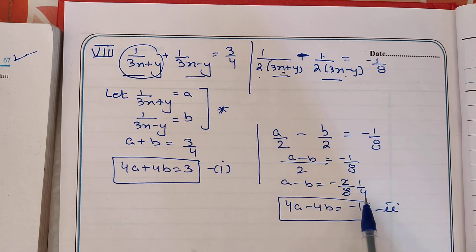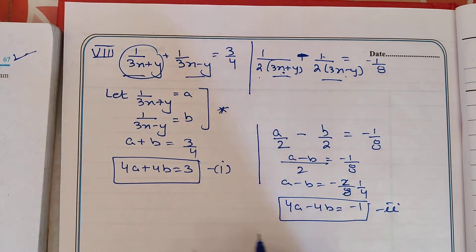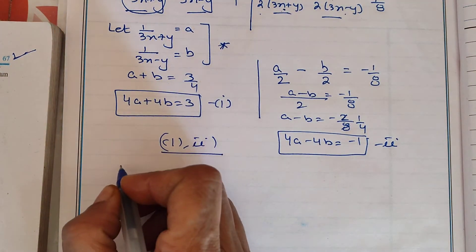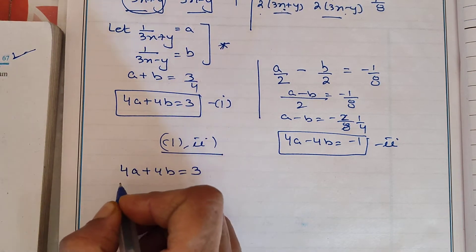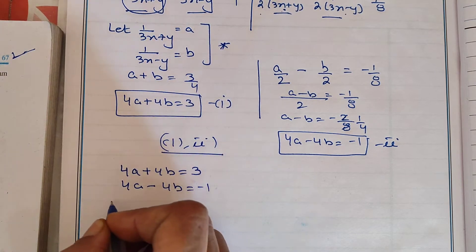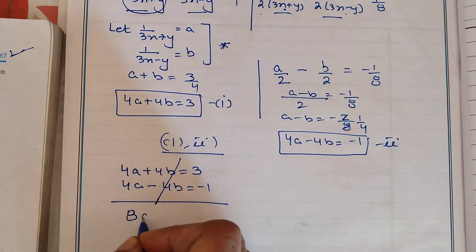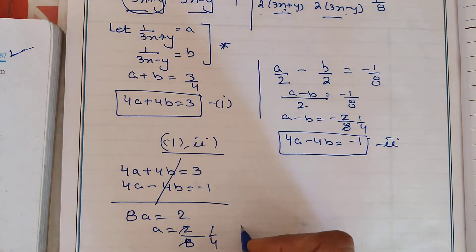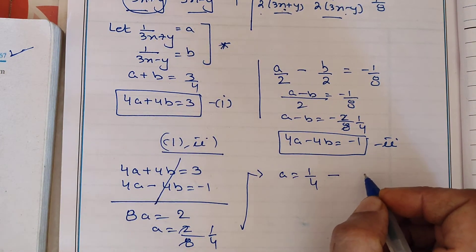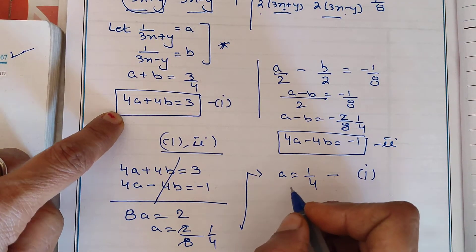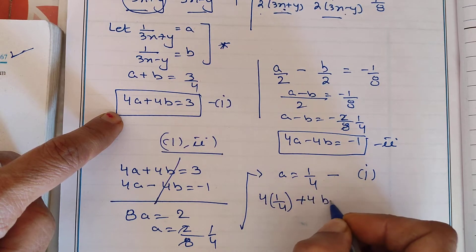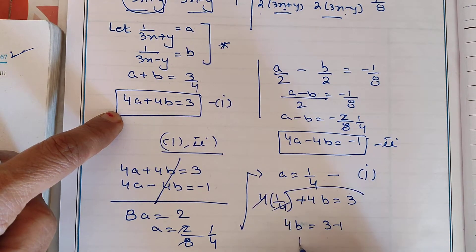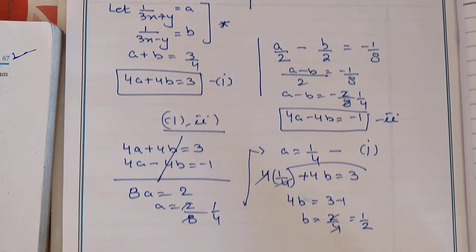So in simple steps we have converted our question into a pair of simple linear equations. We took LCM, cross-multiplied, cancelled 2 with 8, and cross-multiplied by 4. Now we solve these two equations — we can use elimination, cross-multiplication, or substitution, whichever method you prefer. I am using elimination method here because two values cancel without sign change. We get 8a equals 2, so a equals 2/8, which simplifies to 1/4.